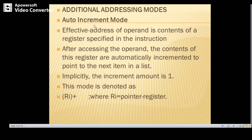Under additional addressing modes, we have auto-increment mode and auto-decrement mode. In auto-increment mode, the effective address of the operand is the content of the register specified in the instruction. After accessing the operand, the content of this register is automatically incremented to point to the next item in the list — denoted as Ri+.